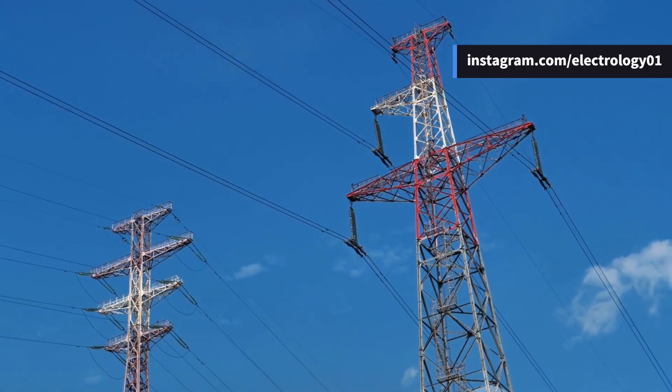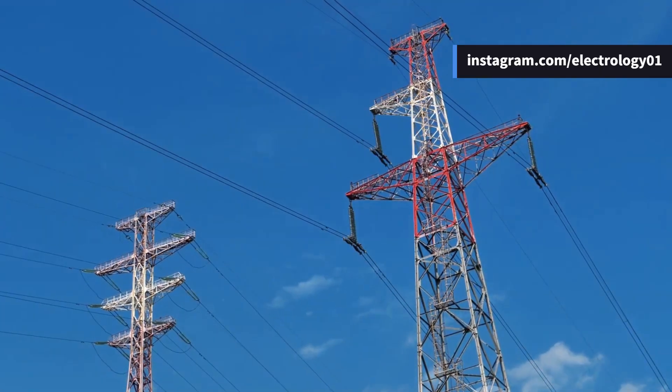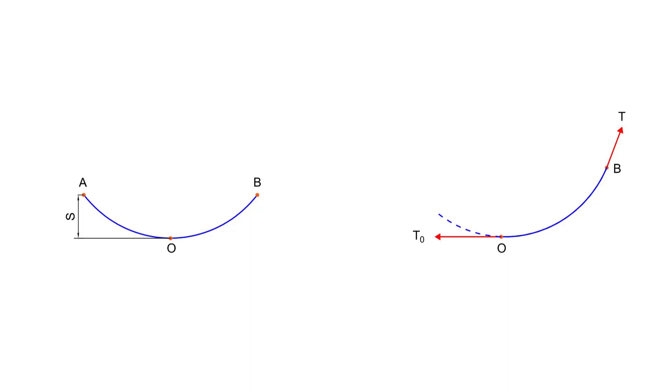Sag is simply the difference in level between the points of supports and the lowest point of the conductor. Imagine two supports at equal height, let's call them A and B. The conductor is tied between them and the lowest point of the conductor is O.